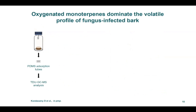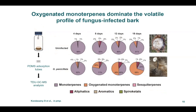In the next step, we wanted to estimate changes in the volatile profile of bark colonized by fungus over time. We analyzed volatiles from the same bark over a time series using PDMS tubes placed inside the glass bottle, later analyzed using GC-TD for compound identification. The fungal infection resulted in a gradual increase in oxygenated monoterpenes compared to control bark. Initially, monoterpenes dominated the volatile profile of the bark, but already after 12 days, oxygenated monoterpenes clearly dominated the volatile profile of the fungus-impacted bark. In the control bark over the same period, monoterpenes still dominated with only a slight increase in oxygenated monoterpenes.